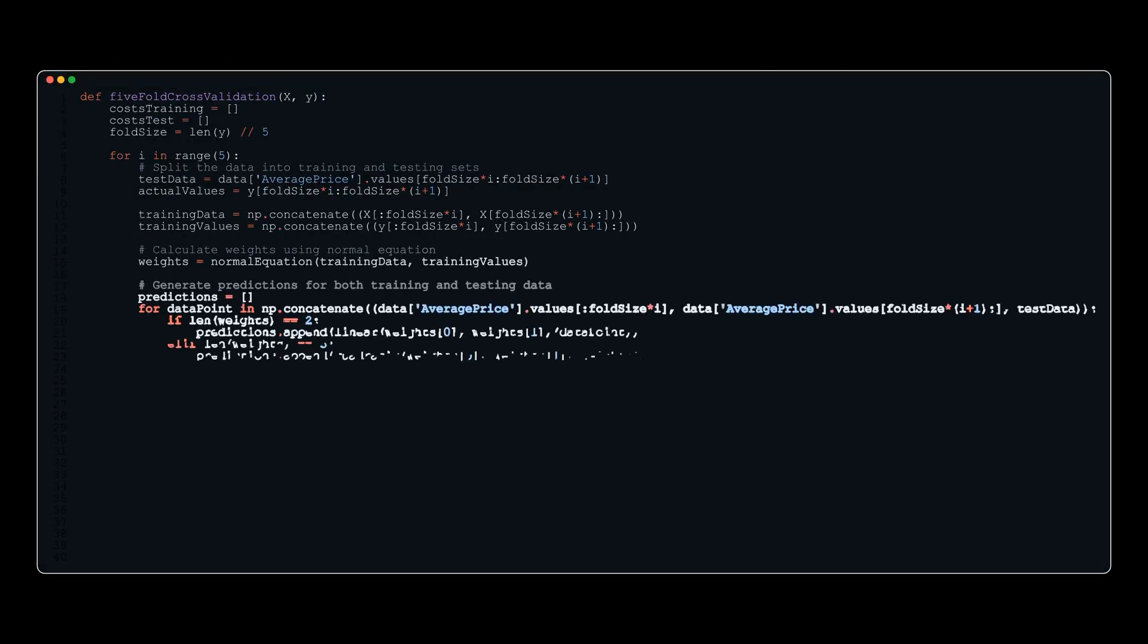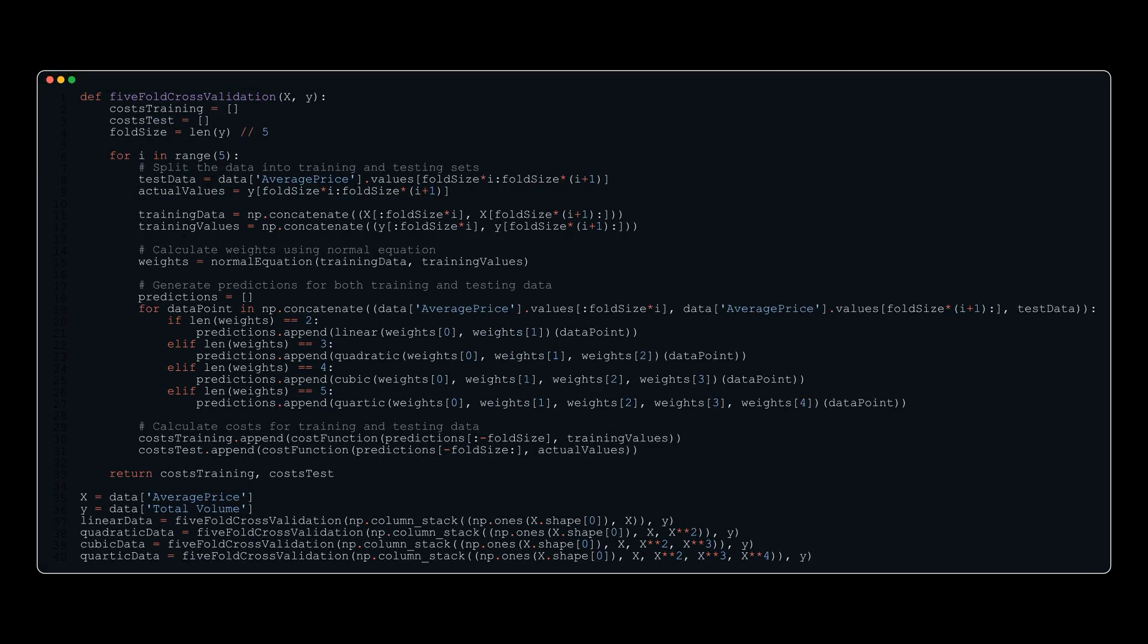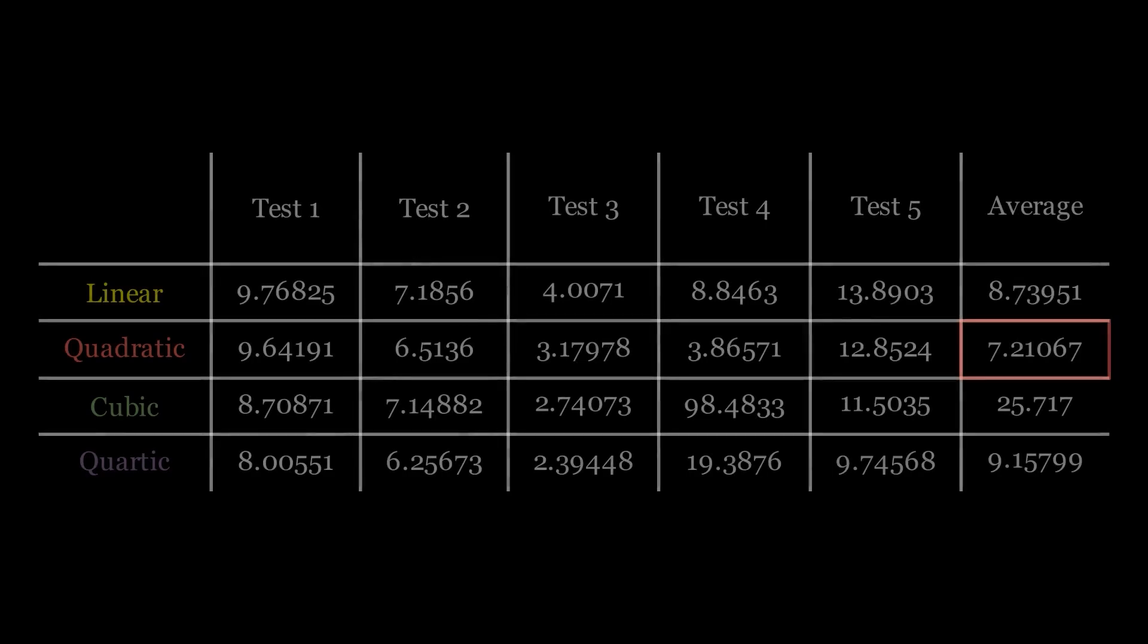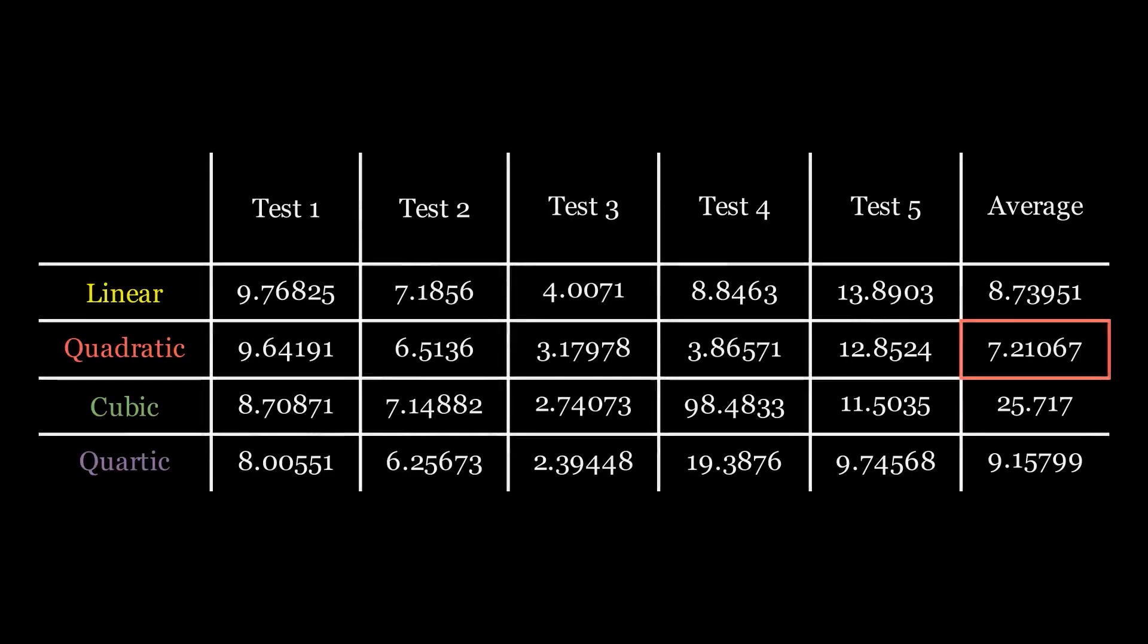Now the code for this is pretty long. So I would just recommend going to the description and downloading the code and maybe copy pasting it from there. But now we can make a table of all our results to see which type of function represents our data best.